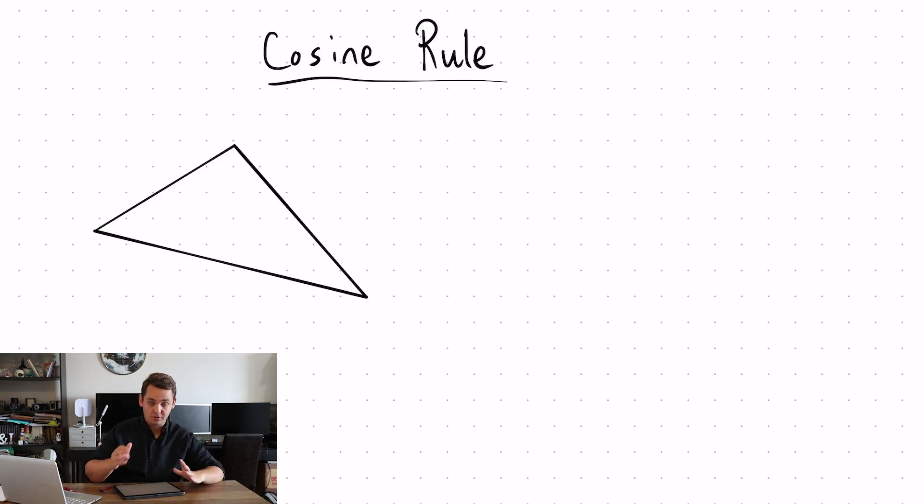So the cosine rule, like the sine rule, relates to any triangle and we label that triangle side A, opposite angle capital A, side B, opposite angle capital B.